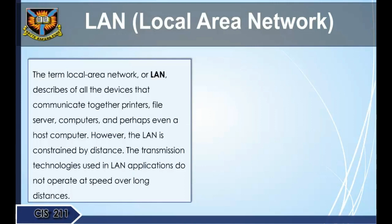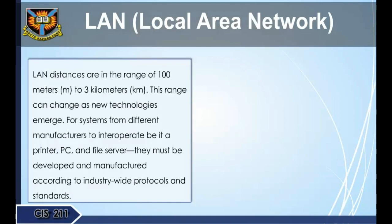A local area network, or LAN, describes all the devices that communicate together — printers, file servers, computers, and perhaps a host computer. However, the LAN is constrained by distance. The transmission technologies used in LAN applications do not operate at speed over long distances. LAN distances are typically in the range of 100 meters to 3 kilometers, though this range can change as new technologies emerge.